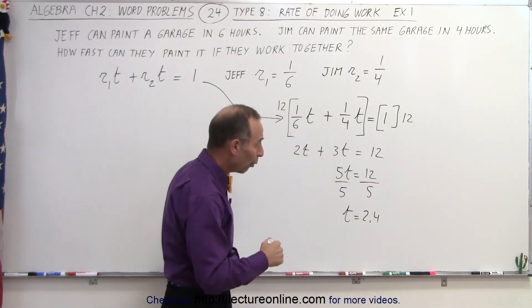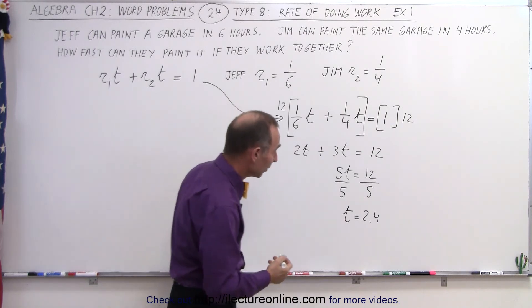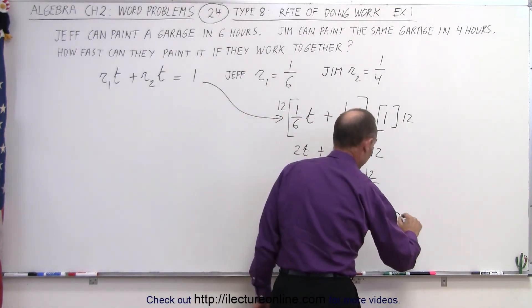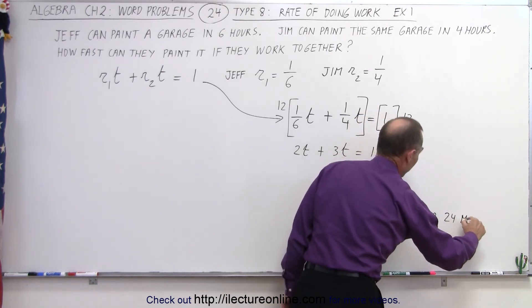Now that's in hours. 0.4 of an hour, that would be 24 minutes. So this is equal to 2 hours and 24 minutes.